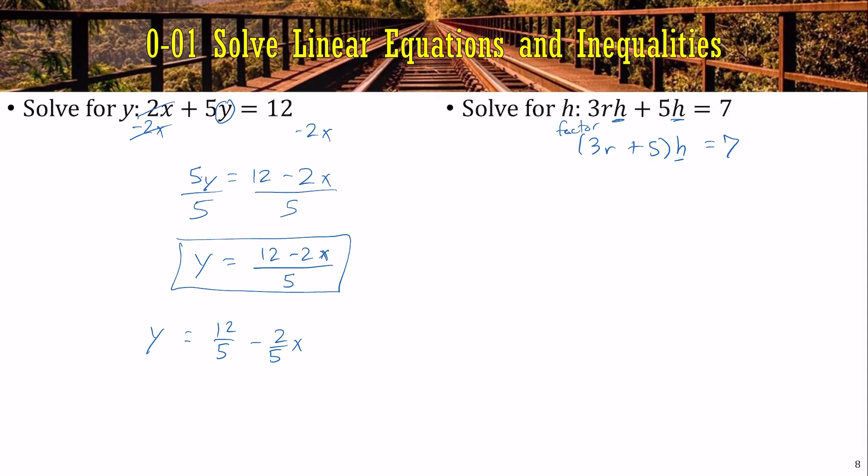And now, get everything away from the h. So we'll divide by the 3r plus 5. So it's 7 over 3r plus 5.